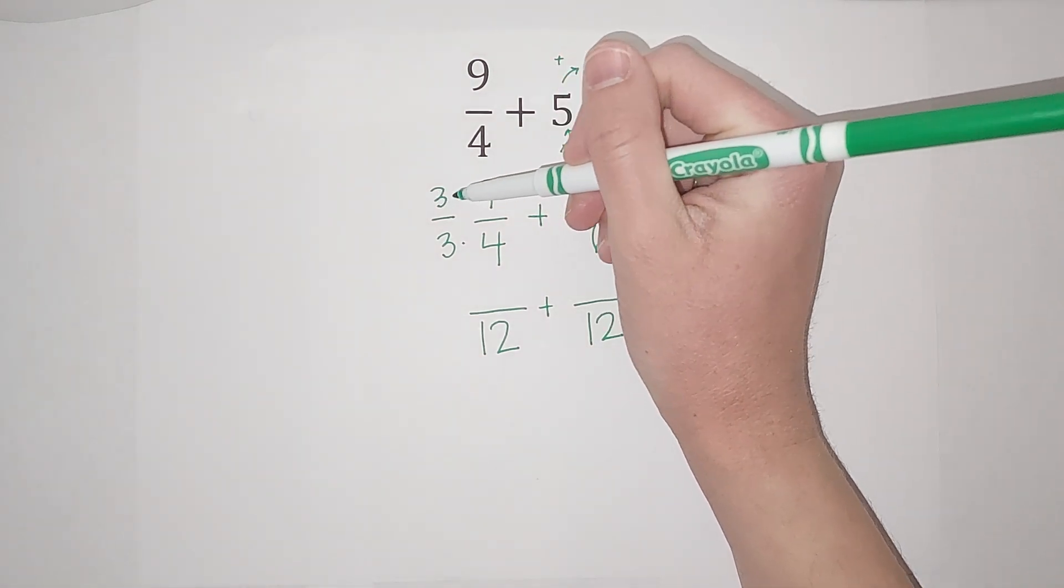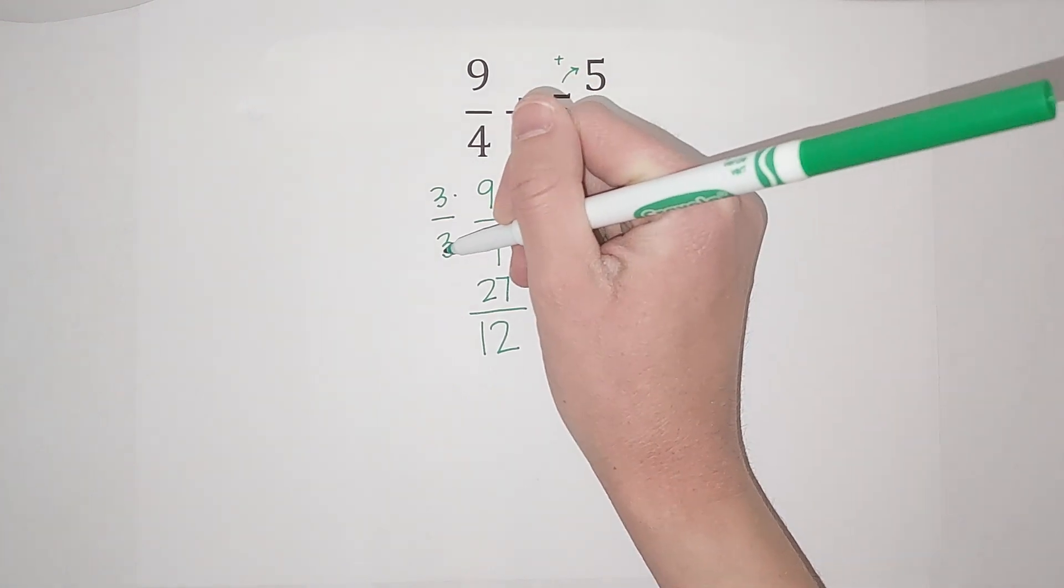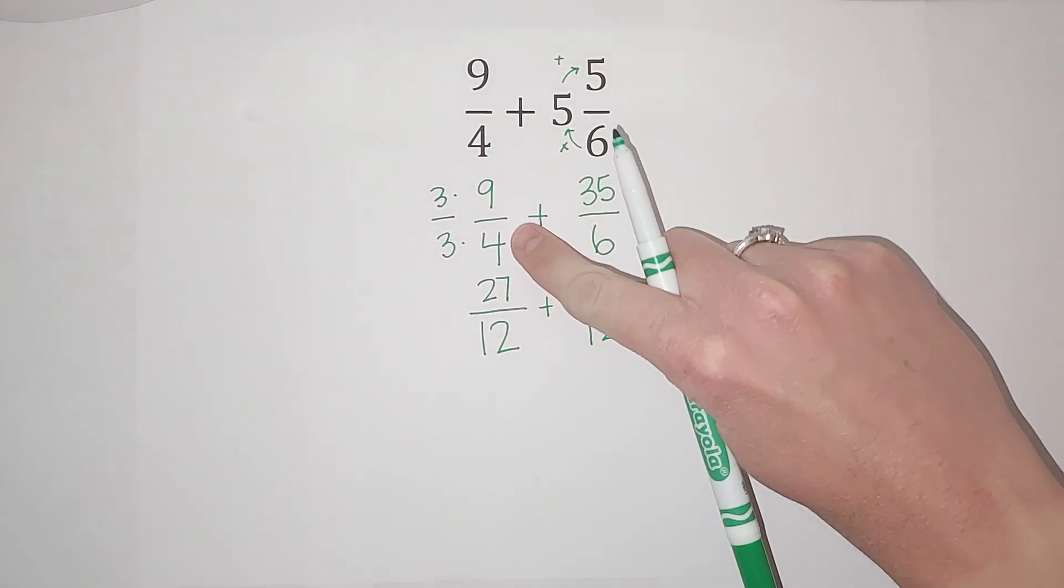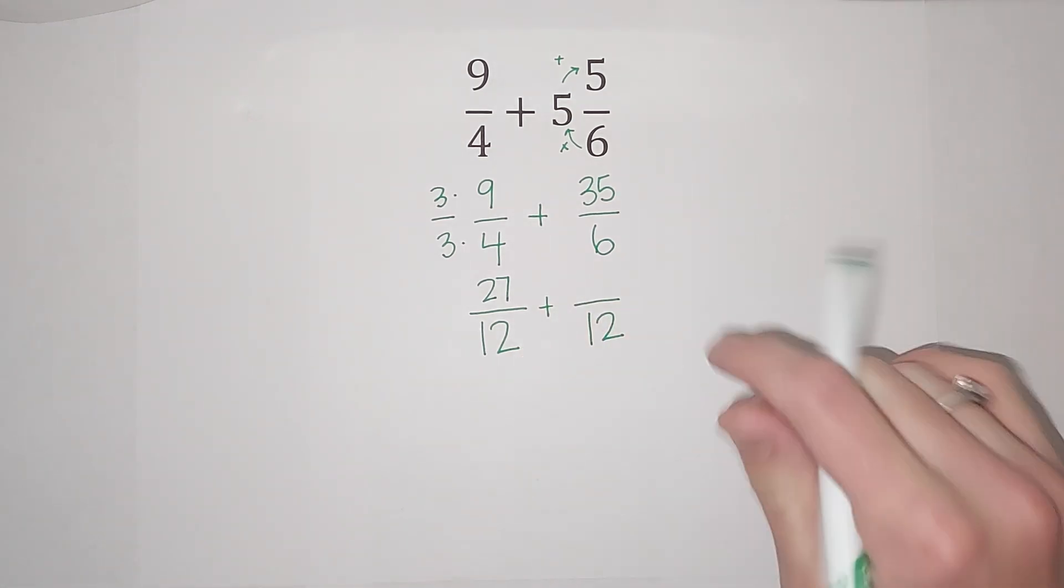So I go ahead and multiply across. 3 times 9 gives me 27. And 3 times 4 gives me that 12. So 9 fourths and 27 twelfths are the same fraction. This one's just simplified down more.